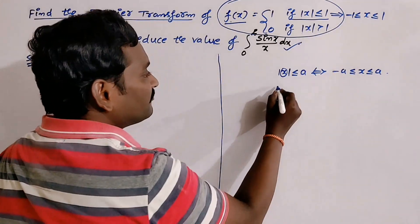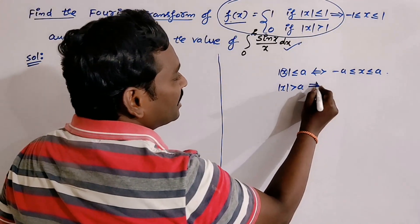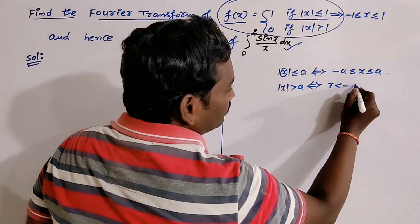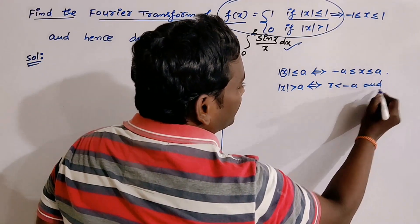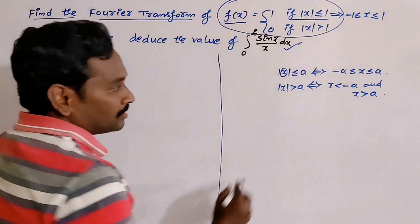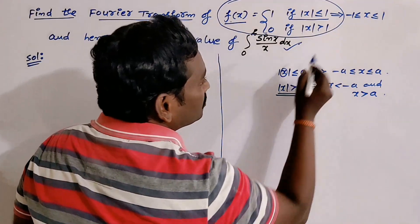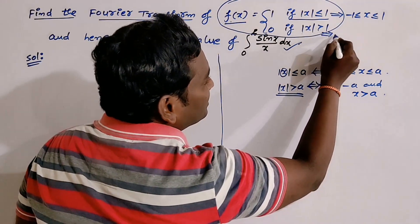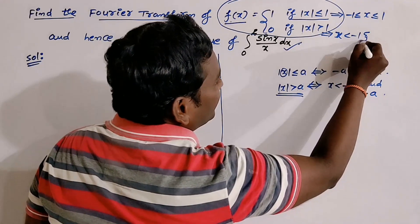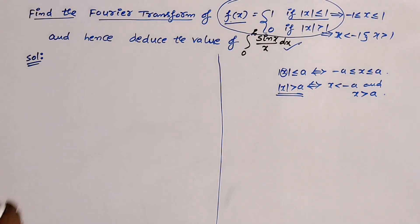Similarly, |x| > a means x < −a or x > +a. So |x| > 1 means x < −1 or x > 1.